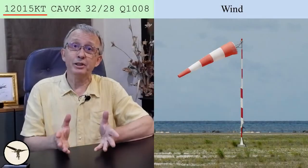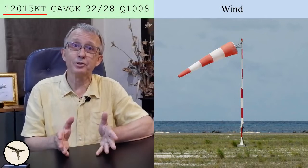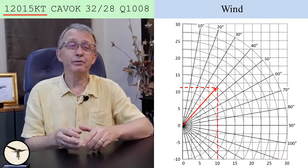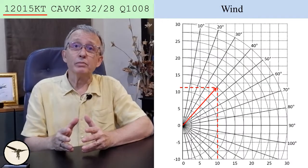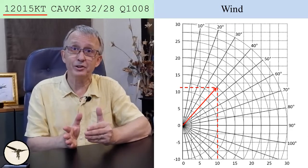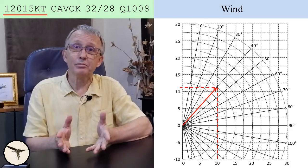A METAR is a coded weather report from an airport. This one reads: wind from 120 degrees at 50 knots, ceiling and visibility okay, temperature 32 degrees Celsius, dew point 28 degrees Celsius, and QNH 1008 hectopascal. The wind direction is 120 degrees and the velocity 50 knots. When the wind is not blowing exactly along the runway, we have to calculate the headwind or tailwind component, and this can be done with a figure like this. If the runway direction is 80 degrees, the wind is 40 degrees off from the right side, giving a headwind component of 11 knots and a crosswind of 10 knots.